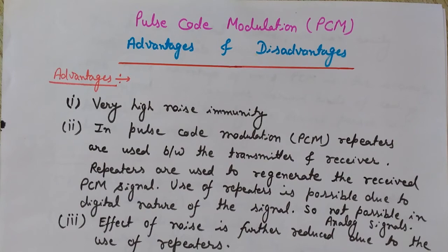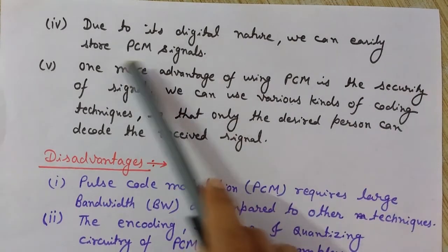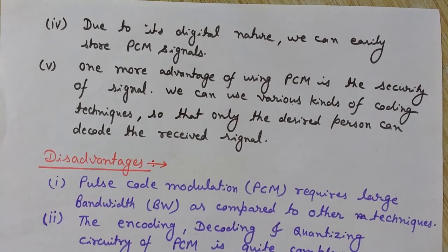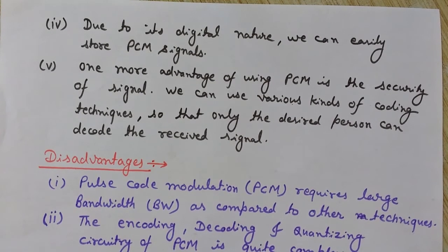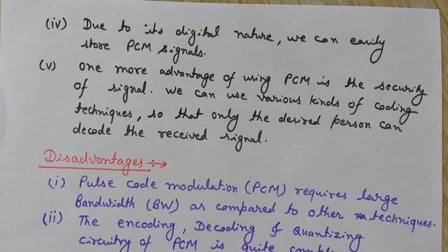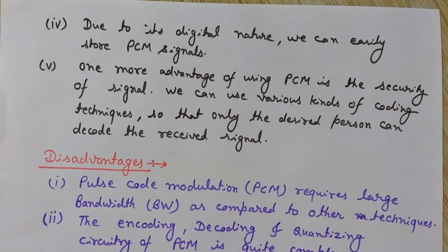The fourth advantage is that due to its digital nature, PCM signals can be easily stored. PCM digital data is used in computer hard drives, CDs, DVDs, and flash drives to easily store and retrieve data. It is also used in many audio applications for easy storage of digital data. From a storage point of view, this is a significant advantage of PCM.